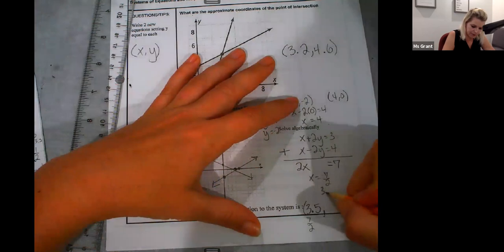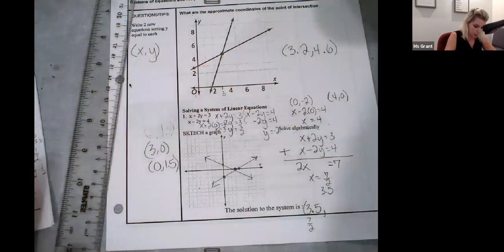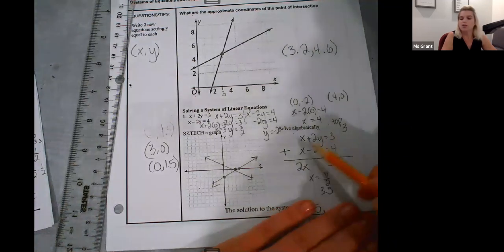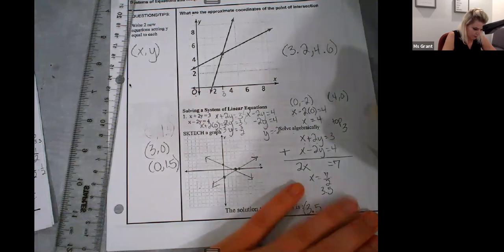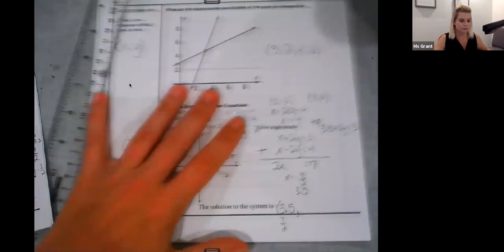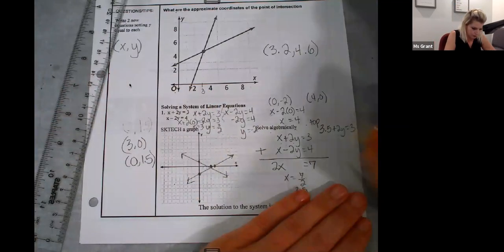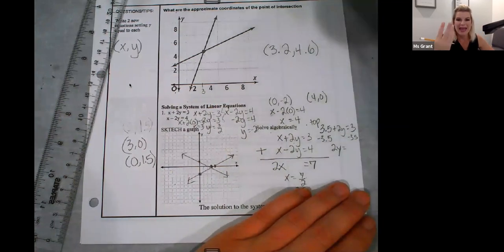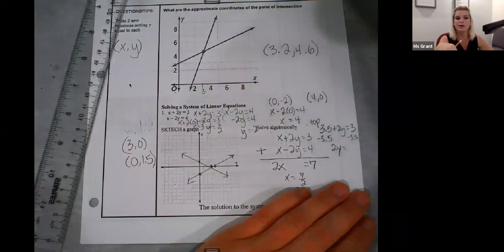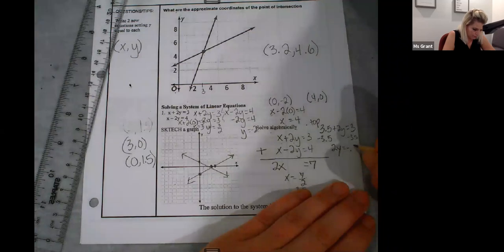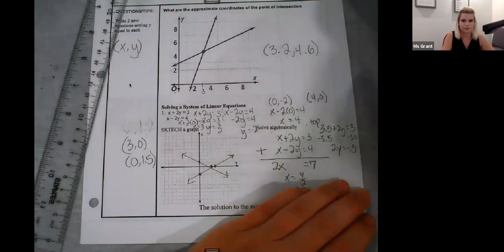Adding 2X equals 7. X equals 7 halves. Well, 7 halves is the same as 3 and a half. Or 3 and 1 over 2. Decimal or fraction is fine. Then, subtract 3 and a half on both sides. 2Y equals... I have 3 and I'm taking away 3 and a half. So, I'm not going under zero. Negative half. Negative 0.5.